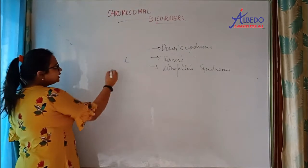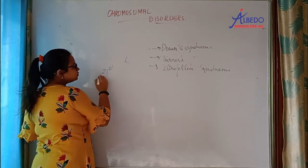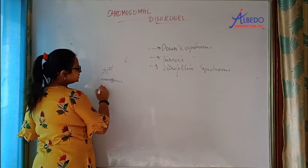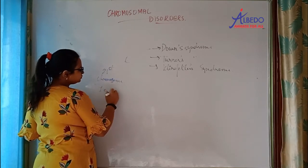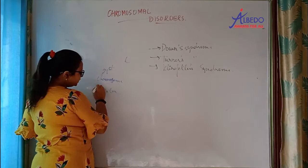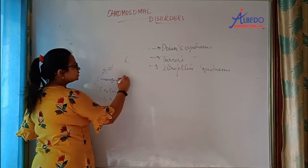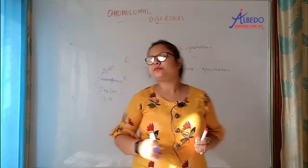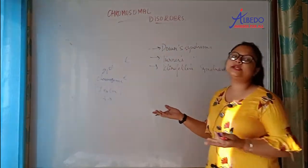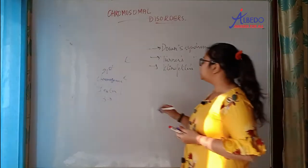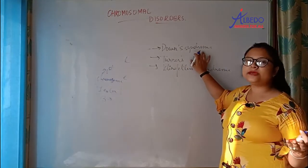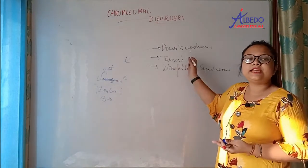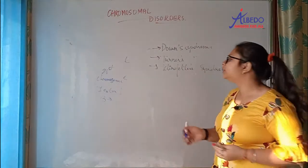Down syndrome — there is an extra 21st chromosome. We call it Down syndrome because Langdon Down discovered it. One chromosome is extra — so this is an example of trisomy. This is an example of trisomy of the 21st chromosome.